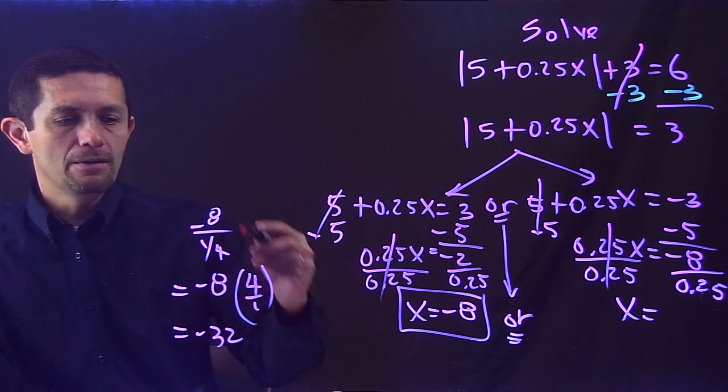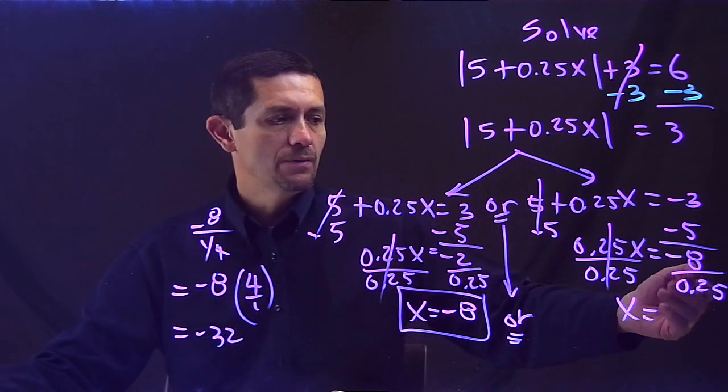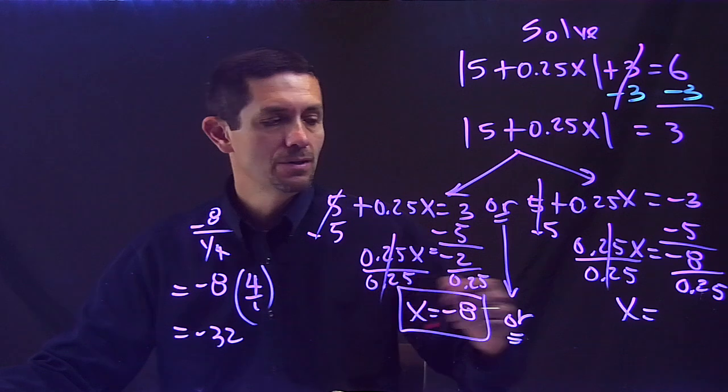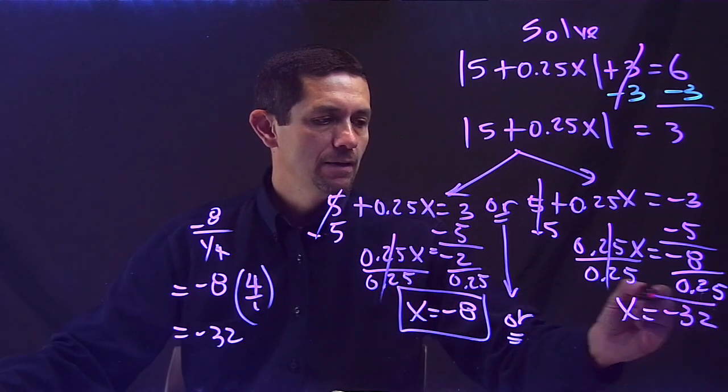Which is negative 32. So this is the thinking that I have right now in my head when I solve negative 8 divided by 0.25. My answer is negative 32.